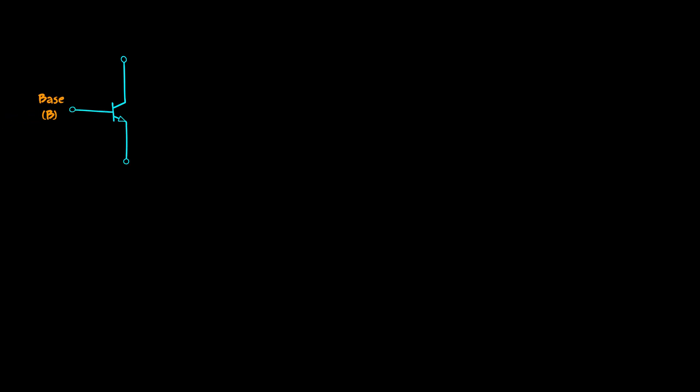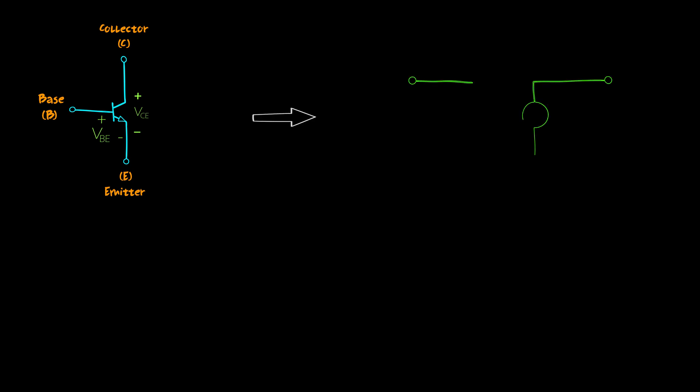A bipolar junction transistor is a three-terminal device: the base, the collector, and the emitter. If we manage to make the voltage VCE larger than VBE, then the BJT is working in the forward active region and can be seen as a voltage-controlled current source.